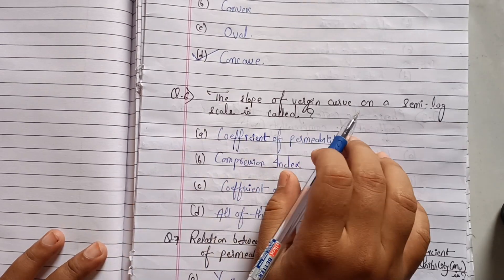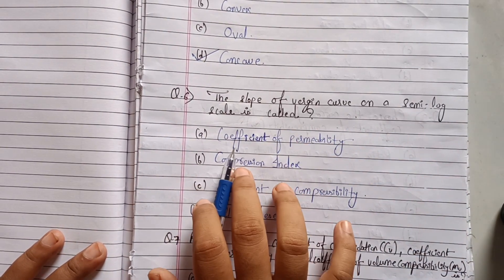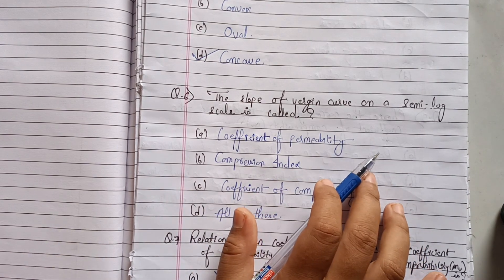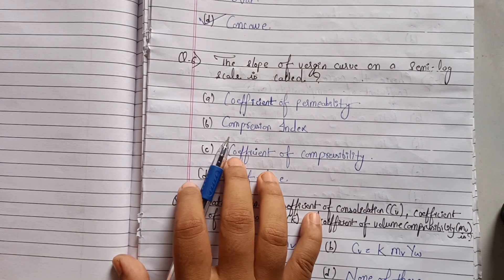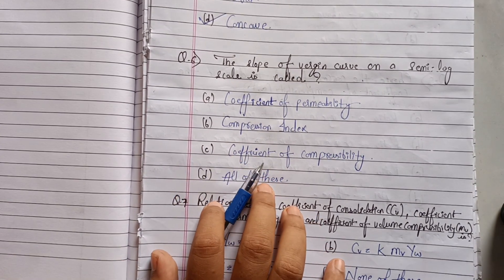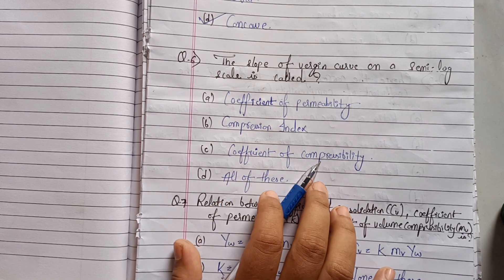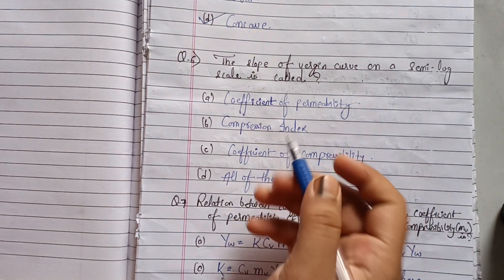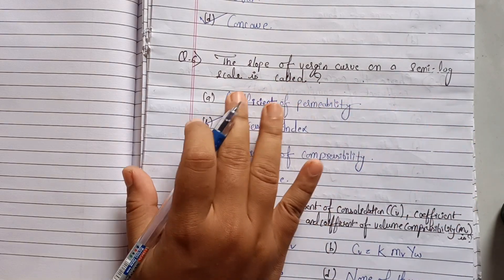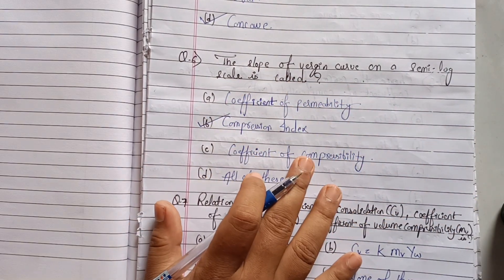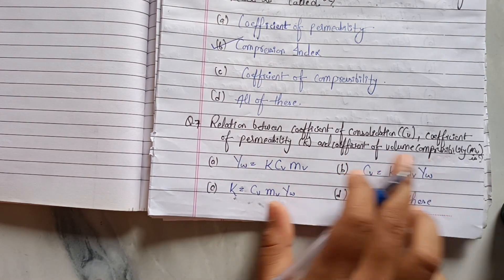Question six: the slope of a virgin curve on a semi-log scale is called? It is not called the coefficient of compressibility — that is the slope for the arithmetic scale. The slope of the virgin curve on a semi-log scale is called the compression index. So option B is correct.